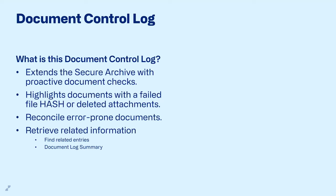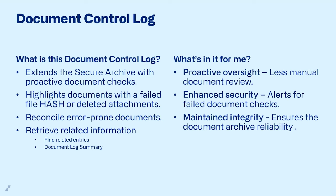From the document control log page, you can go to related information — such as the 'find related entries' action — to get a full view of all transactions involved in an entry, or go to the document log summary to see all the steps the document went through during registration and import. What do you gain from this? You have less manual document review, because the control log notifies you and highlights failed documents very easily. It enhances your security — you know exactly which documents to look at — and ensures that your archive has a reliable structure and that nobody has tampered with it without your knowledge.